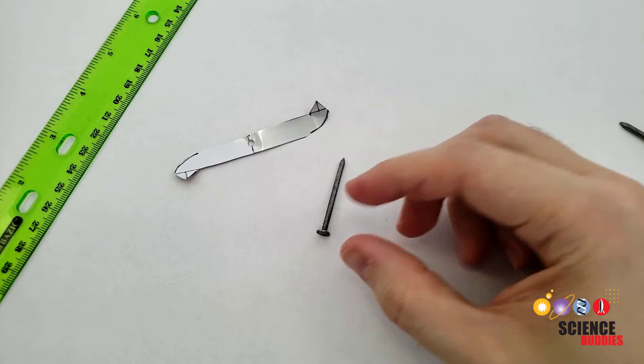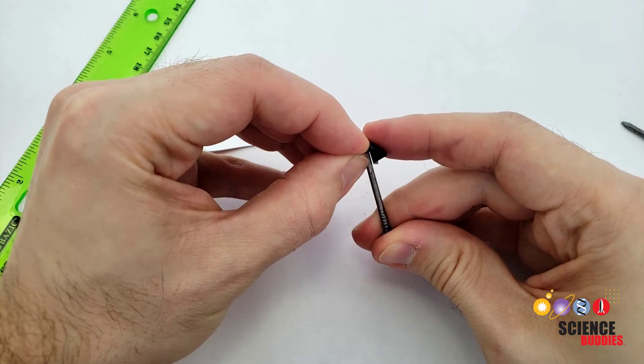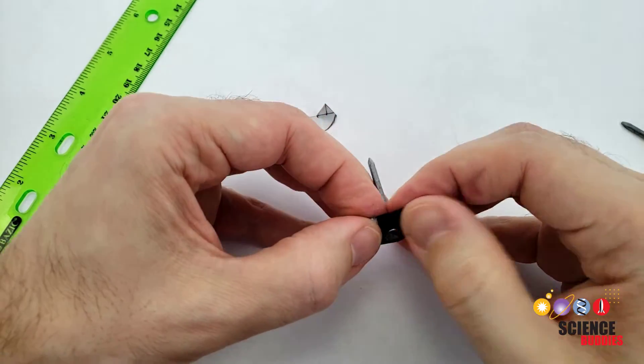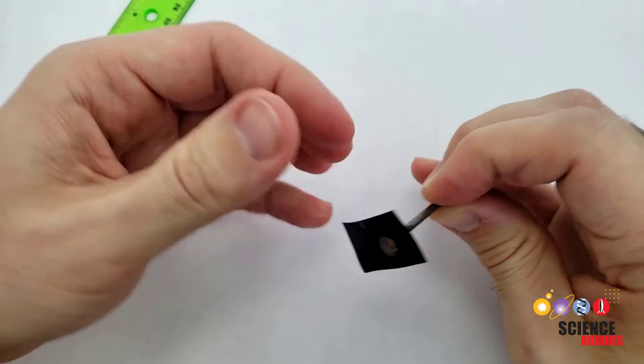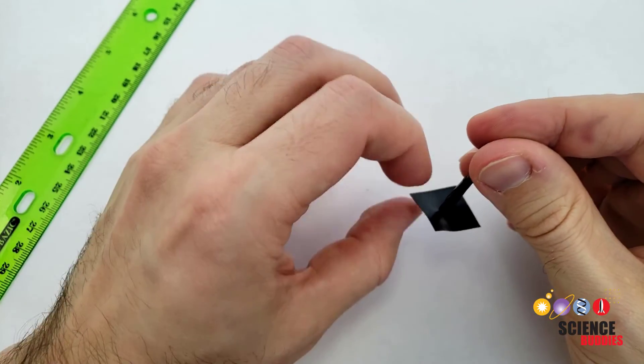Next, take two small pieces of electrical tape. Punch the small nail through the center of one piece with the sticky side of the tape facing towards the head of the nail. Slide the tape all the way down against the head. Wrap the second piece around the nail several times, flush with the head.